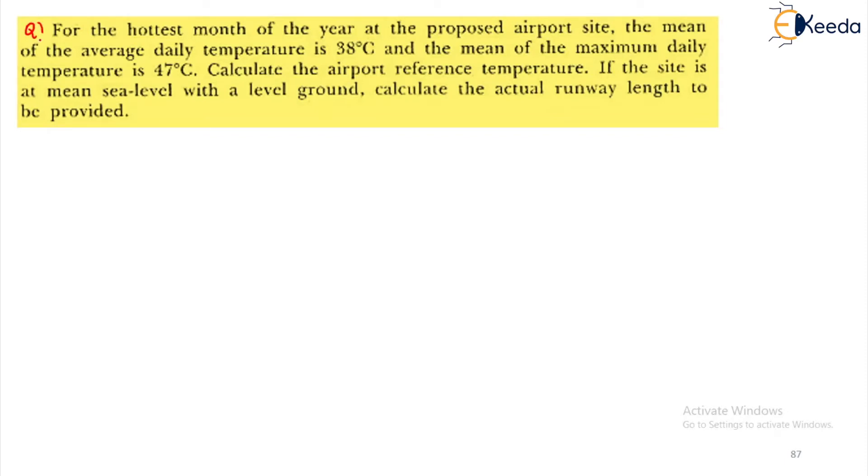The question says for the hottest month of the year at a proposed airport site, the mean of the average daily temperature is 38 degree centigrade. What is given? Let us call this as T1, this is the mean of the average daily temperature that's equal to 38 degree centigrade. And the mean, let's call this as T2, the mean of the maximum daily temperature is 47 degree centigrade.